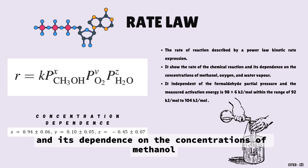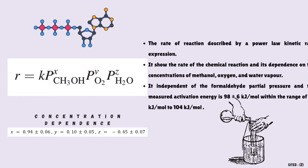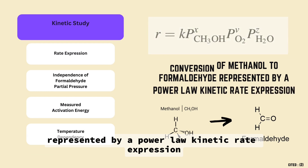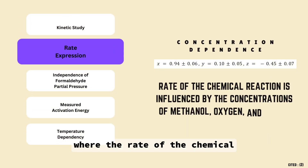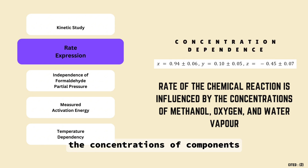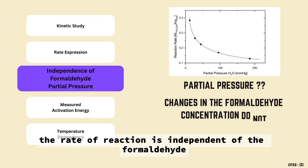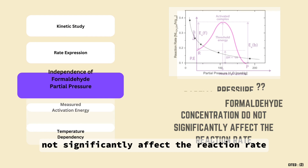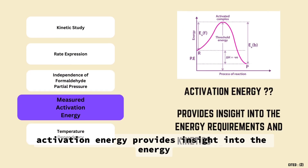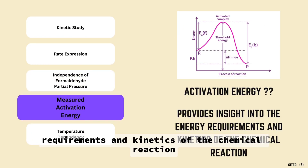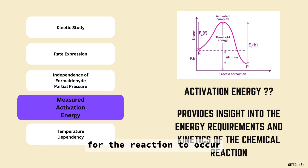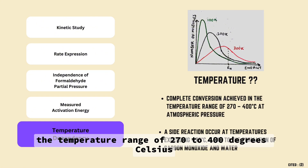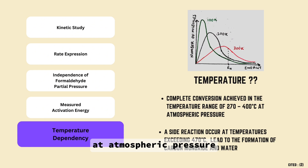The power law kinetic rate expression shows that the rate of reaction is independent of the formaldehyde partial pressure, but depends on the concentrations of methanol, oxygen, and water vapor. Changes in formaldehyde concentration do not significantly affect the reaction rate. Activation energy provides insight into the minimum energy required for the reaction to occur. Conversion is temperature dependent, with complete conversion achieved in the range of 270 to 400 degrees Celsius at atmospheric pressure.